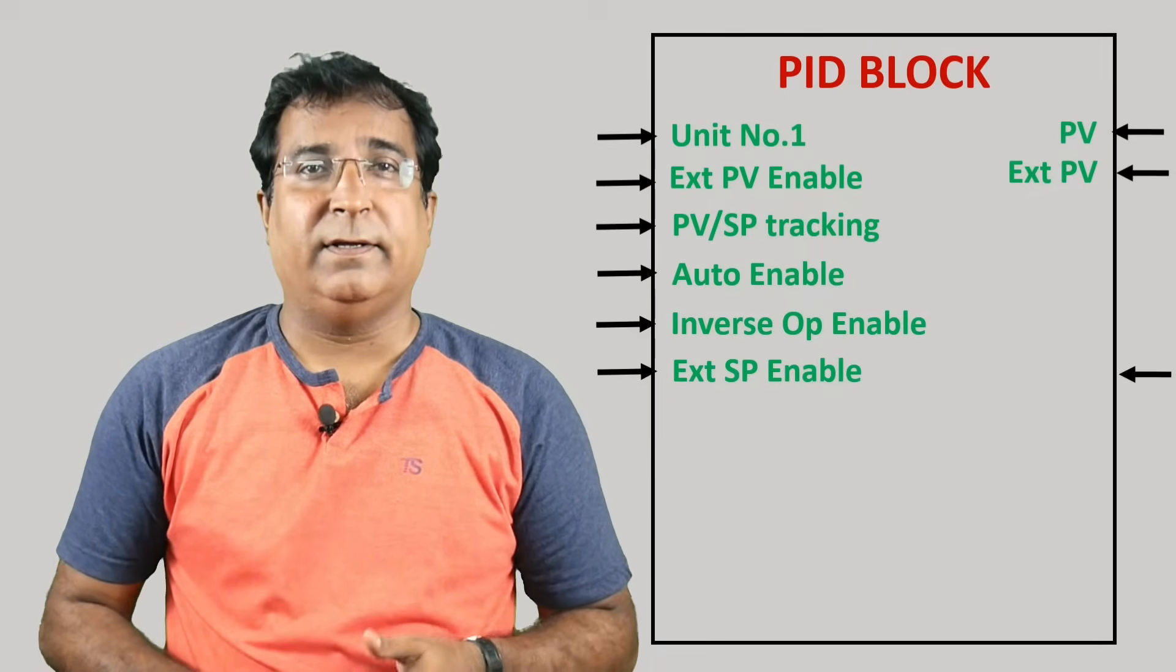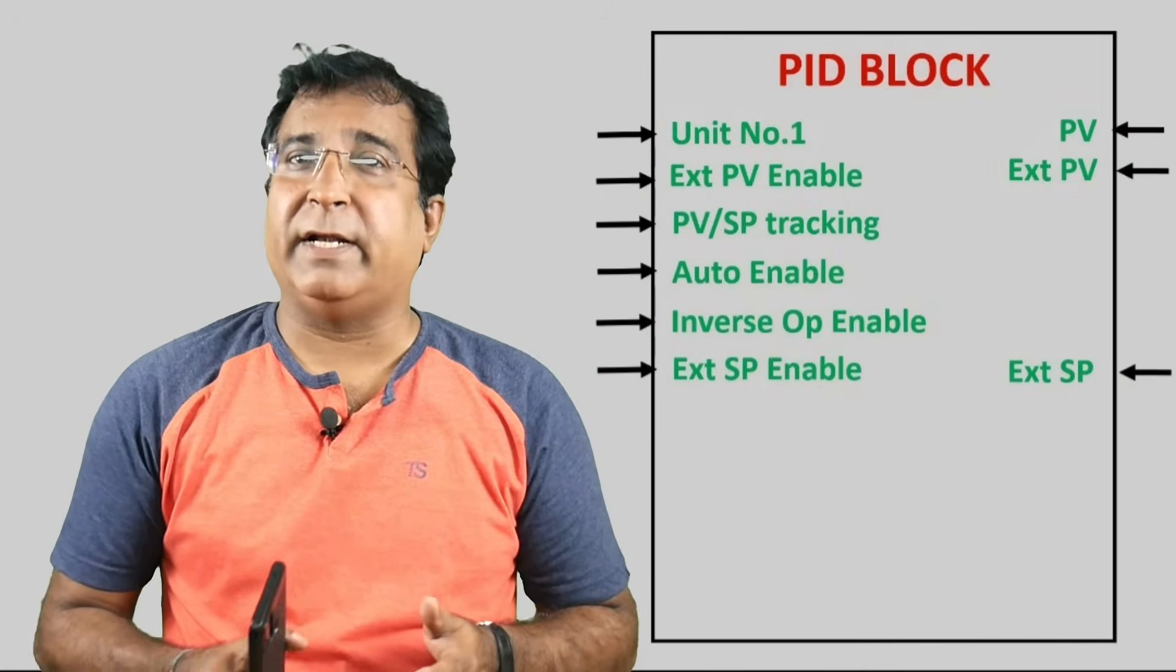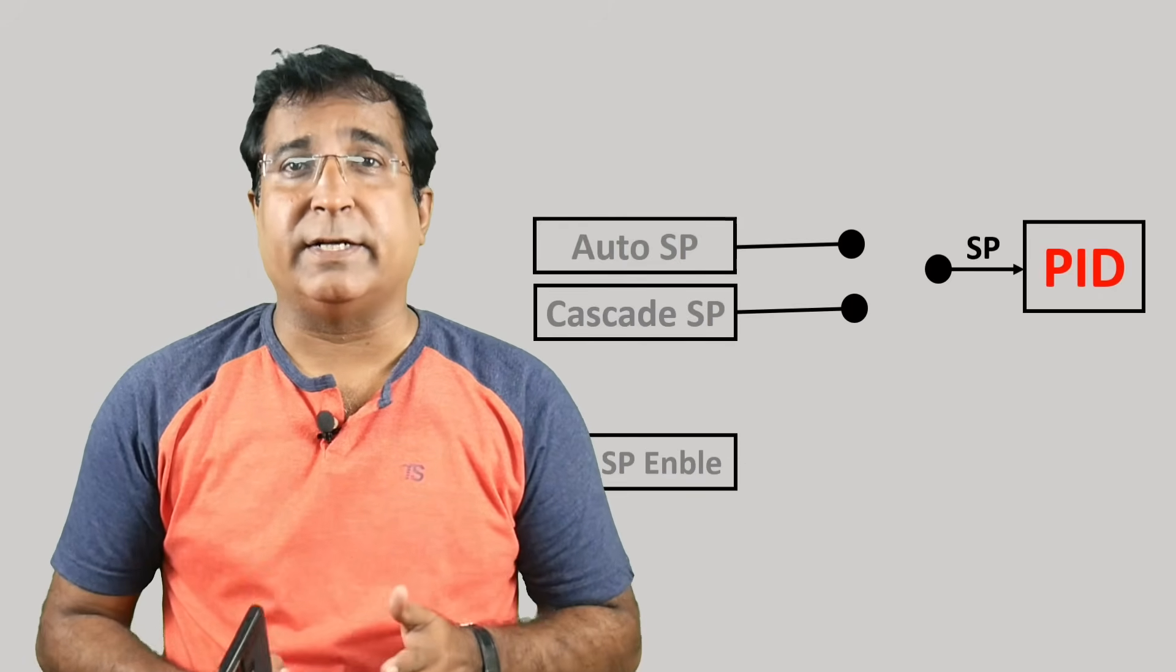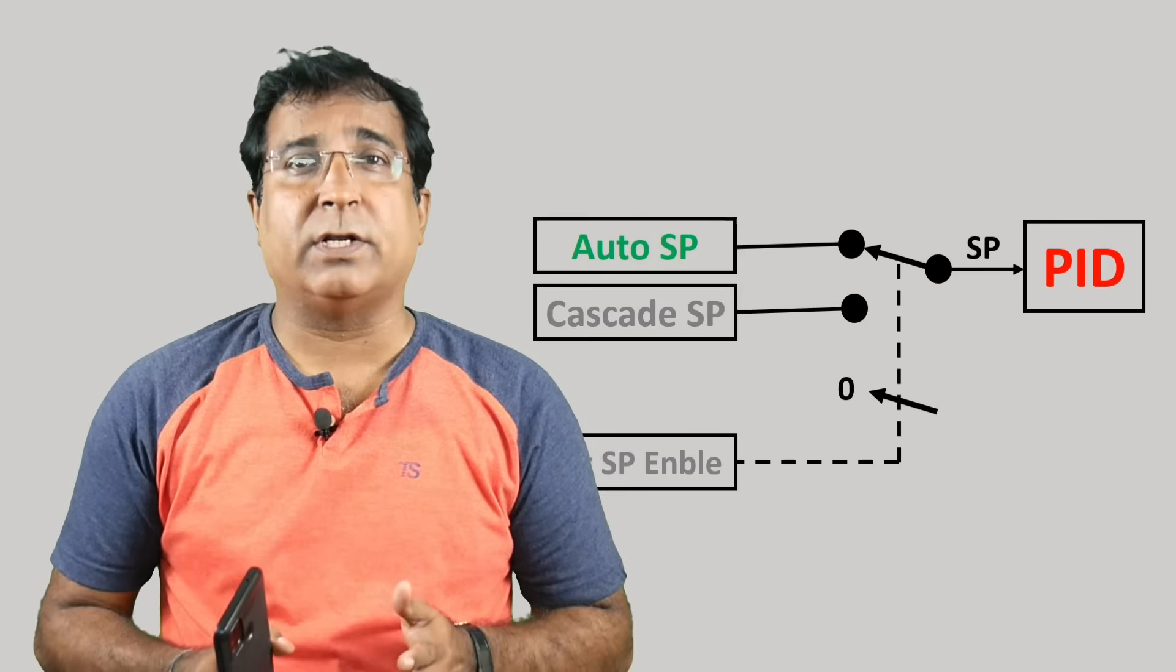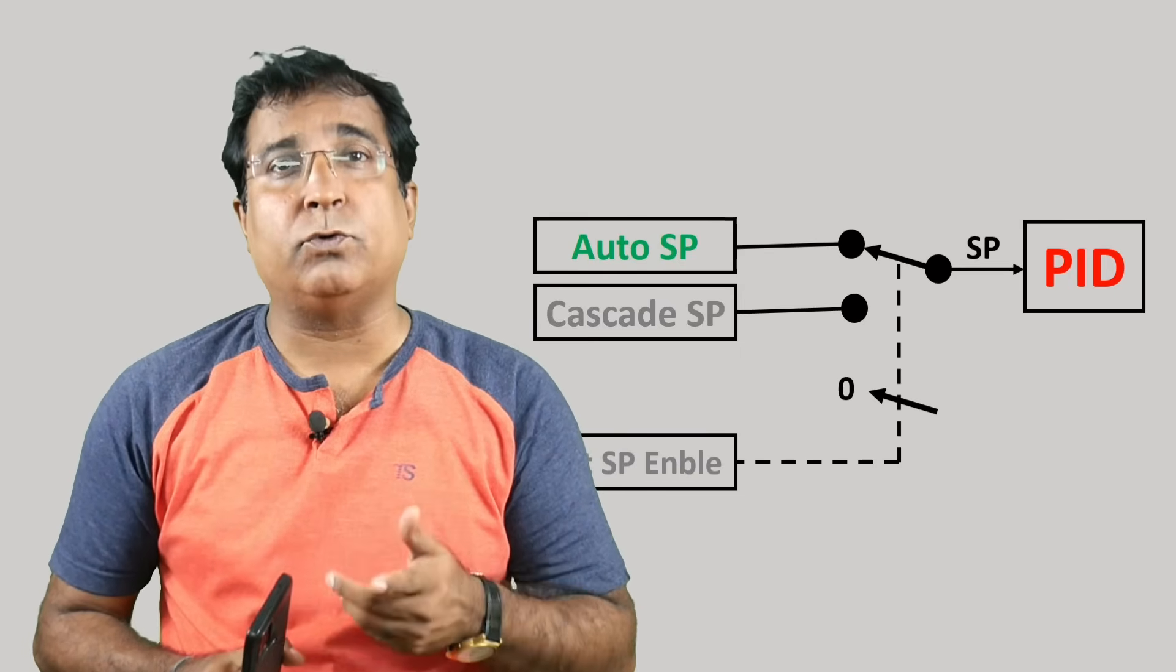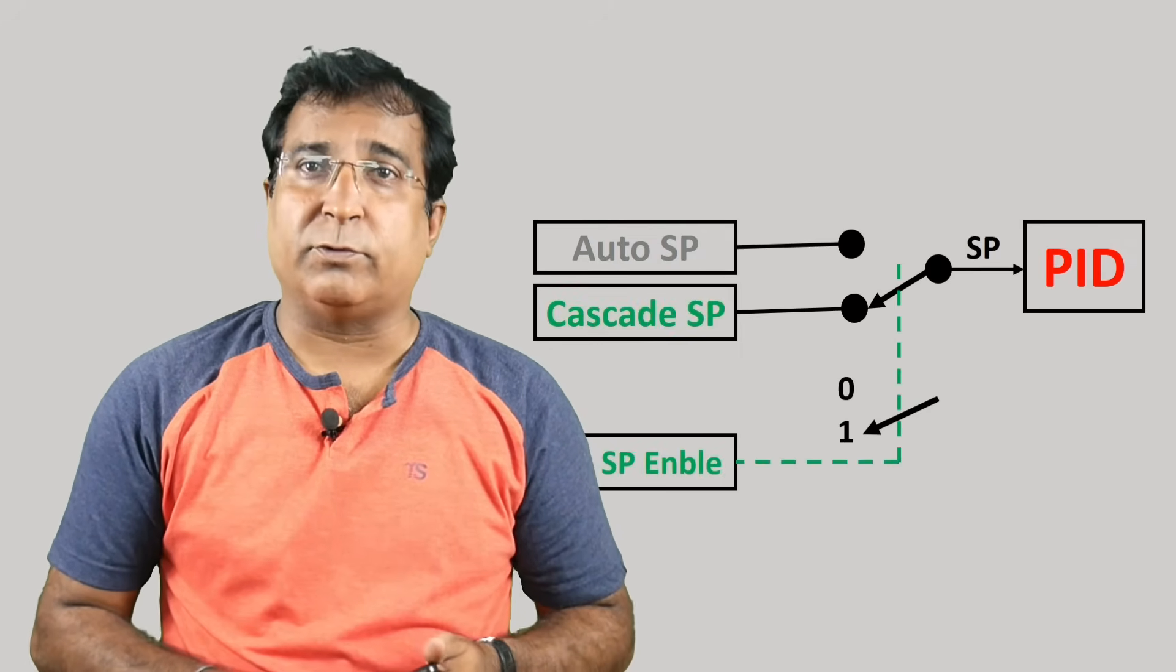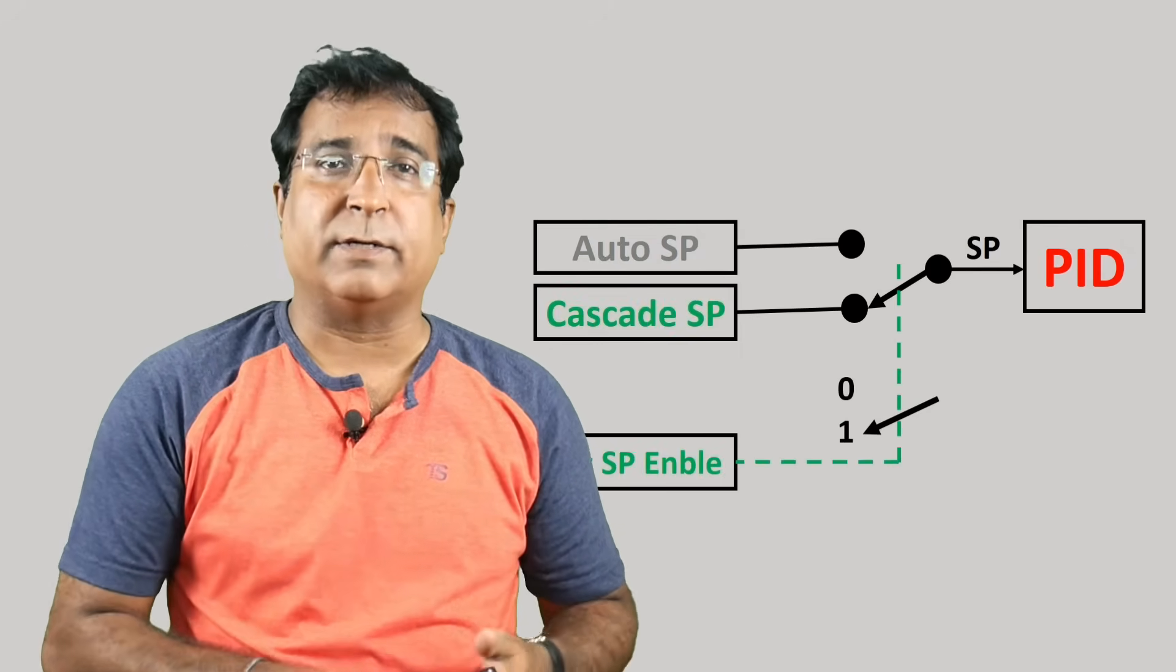Cascade enable bit. Here logical one bit enables the PID controller in cascade mode and you can connect external setpoint to the PID controller. On the screen you can see the moment this bit is set to logical one, the PID controller switches the setpoint from auto to external setpoint. Here a process event or condition can also be programmed to shift the PID controller into cascade mode.